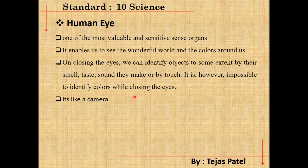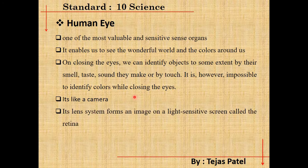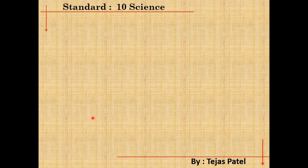The human eye is like a camera. It has a lens system — the crystalline lens — which acts as a light-sensitive screen where the image is formed. That screen is called the retina. Now let us define the different parts and their functions one by one.